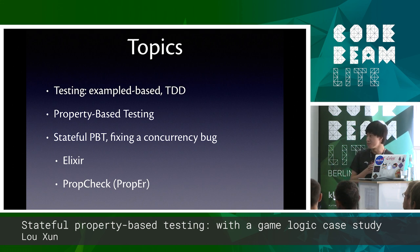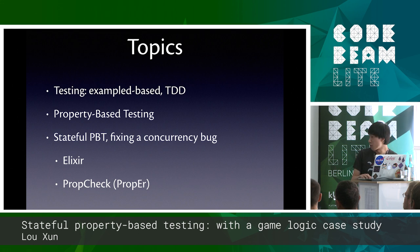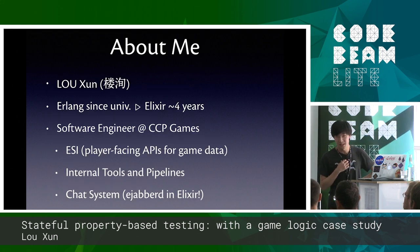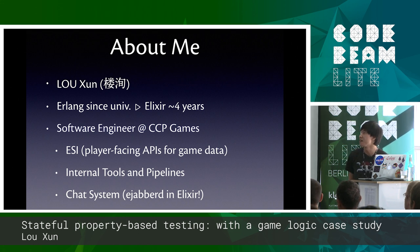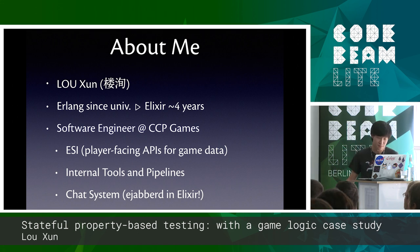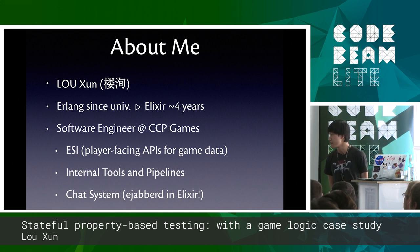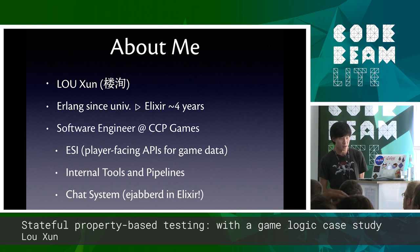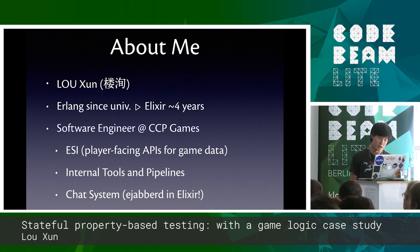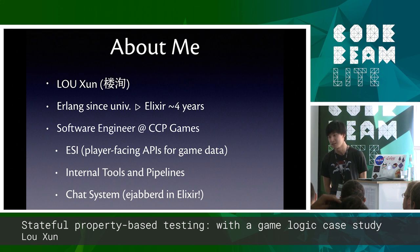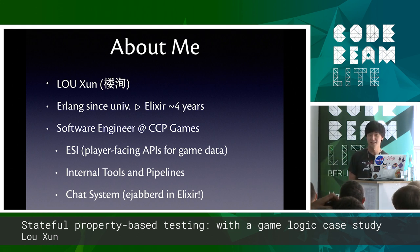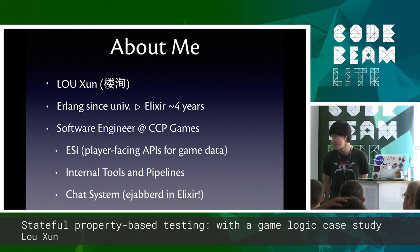The prototype is in Elixir, and I'm going to use PropCheck, the library, which is an Elixir wrapper of the underlying Erlang property-based testing engine PropEr. A little bit of self-introduction: my name is Lo Xun — that's my Chinese spelling. I've been interested in Erlang since university, and for the last few years I've been doing Elixir stuff on side projects and sometimes prototype format at work. At work I'm a software engineer at CCP Games. With my team we've worked on ESI, or as we say, EZ — it's a player-facing API for all of our games data. I also work a lot on our internal tools and pipelines, such as builds or monitoring solutions. Recently I took over our new track system in Elixir, so finally I can work with Erlang and Elixir at work.